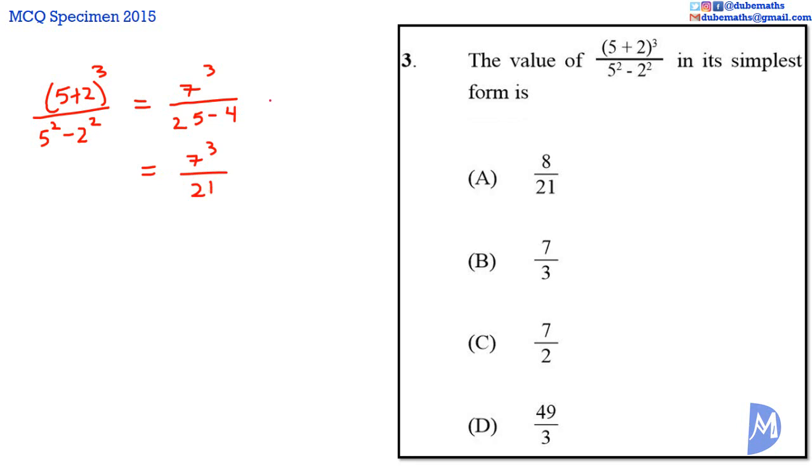7 cubed equals 7 multiplied by 7 multiplied by 7. 7 multiplied by 7 is 49. And 49 multiplied by 7 equals, 9 multiplied by 7 is 63, 4 multiplied by 7 is 28, plus 6 is 34, so 343. We have 343 over 21.